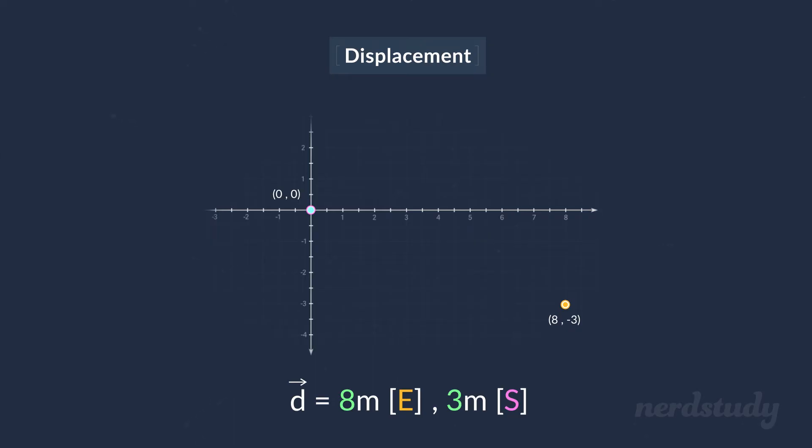Now, hmm, is it a coincidence that this coordinate looks so similar to the displacement? Well, absolutely not. Because really, the displacement of a particle is its final position after we move the origin to its initial position.